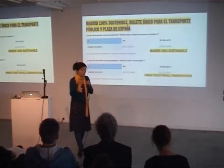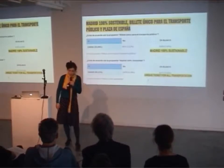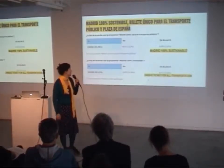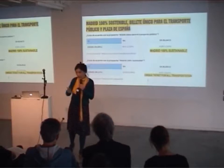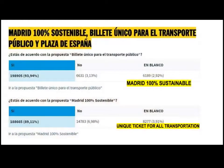Right now, two proposals have already come through: one on Madrid 100% sustainable, and the other on a unified ticket for all transportation. The first one is already under implementation — it concerns the energy matrix of Madrid. The second one is under negotiation because it's not fully within the competencies of the City Hall.